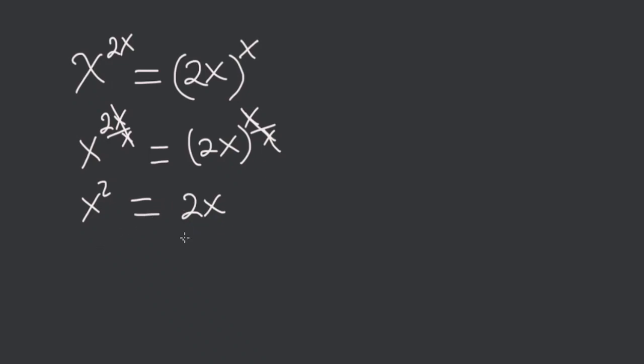So subtracting 2x from both sides, we get that x squared minus 2x is equal to 0. So we have a quadratic here: x squared minus 2x is equal to 0.